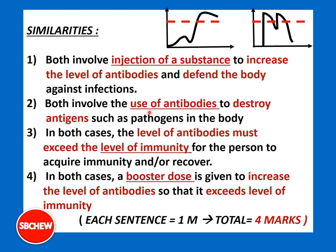Both involve the use of antibodies to destroy antigens or pathogens. In both cases, the aim of giving the injection is to increase the level of antibodies to destroy antigens — either in the future, for the vaccine, or in the present moment when the person is sick, for the anti-serum. In both cases, the level of antibodies must exceed the level of immunity for the person to become immune or to recover.